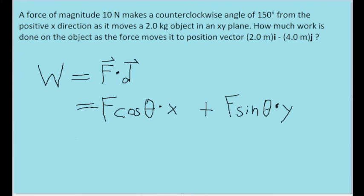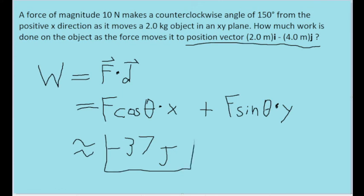So now we can simply just plug this into our calculator, using 10 newtons for f, 150 degrees for theta, and then for x and y, we'll use the x and y components given to us in the position vector, where 2.0 meters is x and 4.0 meters is y. Rounding to two significant figures and plugging this into your calculator, this should get you an answer of about negative 37 joules. And that is our final solution.